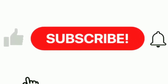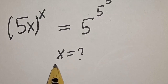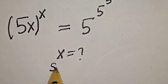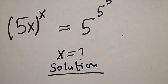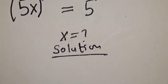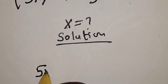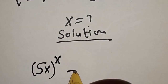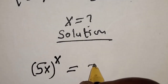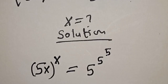But before we proceed, please don't forget to like, share, comment and subscribe. Solution. We have the given equation: 5s raised to power s is equal to 5 raised to power 5 raised to power 5.